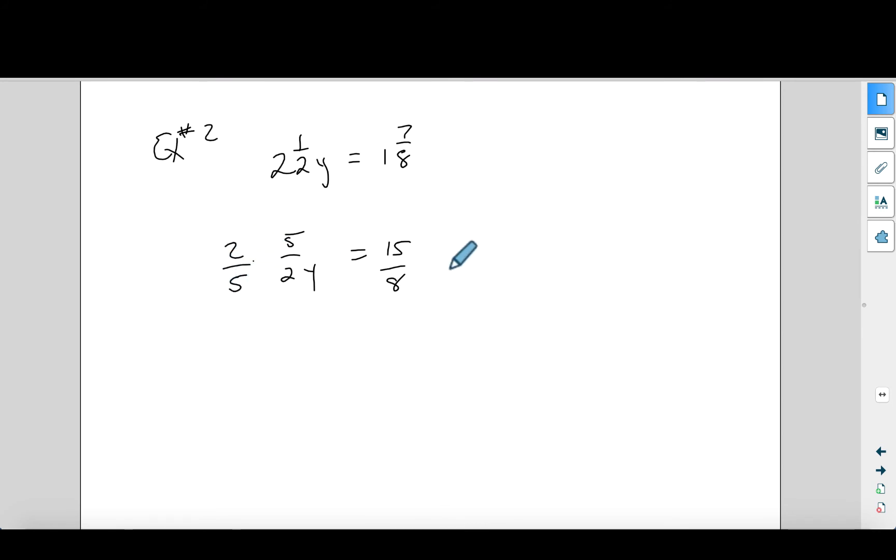So two times two is four plus one is five over two y equals eight times one is eight plus seven is fifteen over eight. Now we can do it. Multiply by the reciprocal on both sides, two over five. I always cancel these out. There's y equals fifteen over eight times two over five. Now, I like to do some canceling here to make my math a little bit easier. So five divided into itself goes once. Five into fifteen goes three times. Two into itself goes once. Two into eight goes four times. So now I'm left with three times one is three. Four times one is four. Boom. There's my answer. That's positive.